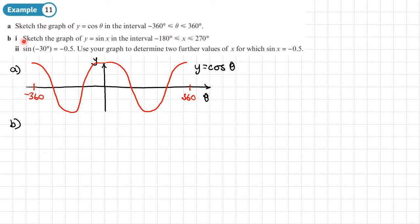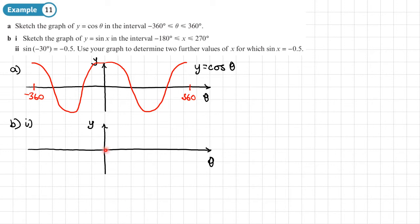Part b, part one: sketch the graph of y equals sin x between negative 180 and positive 270. We draw an axis — it will be slightly lopsided since we have more of the sine graph on one side. Sine starts at zero. Going right: 0, 90, 180, 270 — it stops there. Going left: negative 90, negative 180 — it stops there.